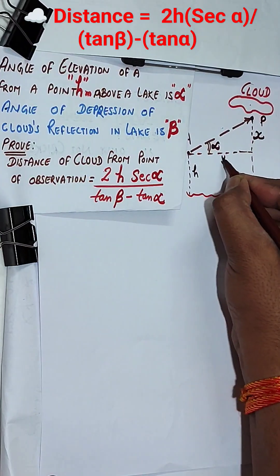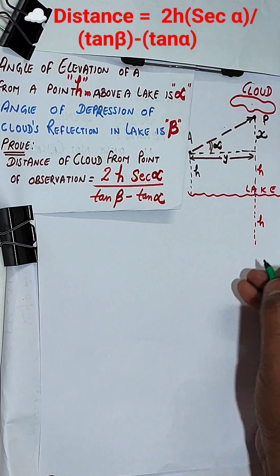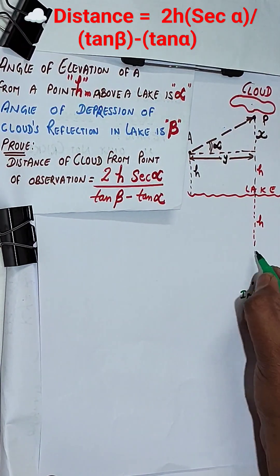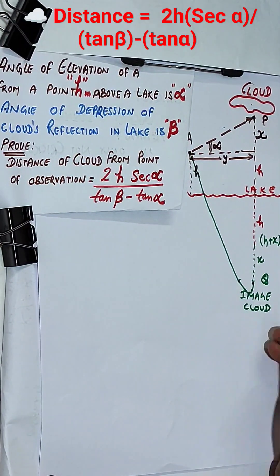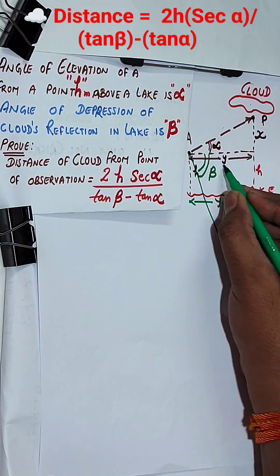And the angle of depression to the image of that cloud is beta. If you are assuming x as the point from height h to P, then the image will be h plus x. Again, we use the tangent in triangle ABP.